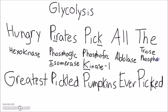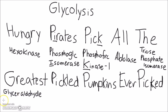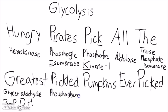'The' is triose phosphate isomerase. 'G' for 'Greatest' is glyceraldehyde-3-phosphate dehydrogenase. 'Pickled' — P with a K in there — so it's phosphoglycerate kinase. 'Pumpkins' has an M, so it's phosphoglycerate mutase.